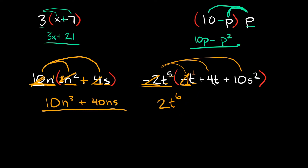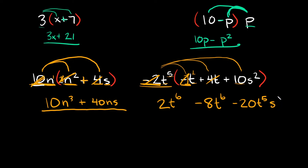Lastly, negative 2t to the fifth times 10s squared: negative 2 times positive 10 is negative 20, and t to the fifth times s squared — those are completely different variables, so we just write t to the fifth s squared. So your final answer is 2t to the sixth minus 8t to the sixth minus 20t to the fifth s squared.